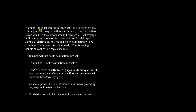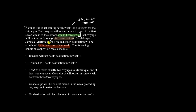A cruise line is scheduling seven week-long voyages for the ship Azad. Each voyage will occur in exactly one of the first seven weeks of the season, weeks one through seven. This is a sequencing or ordering game. Each voyage will be to exactly one of four destinations — Guadeloupe, Jamaica, Martinique, or Trinidad. Each destination will be scheduled for at least one week. So our game pieces G, J, M, and T must each appear at least once.